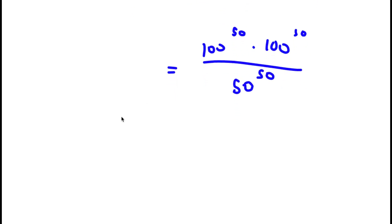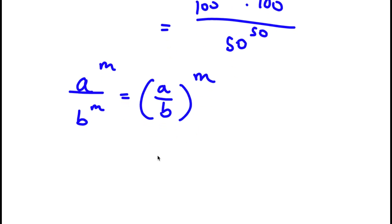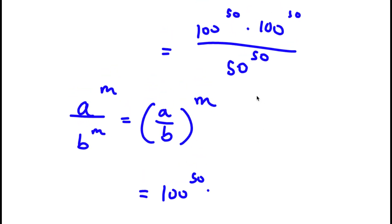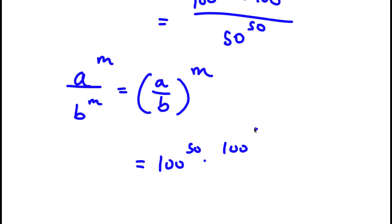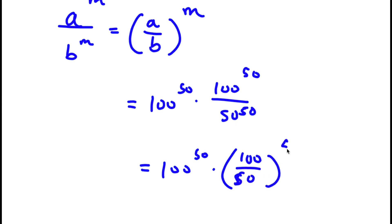Now, if I have something in the form a to the power of m over b to the power of m, this is equal to a over b, to the power of m. So in this case, I can rewrite 100 to the power of 50 over 50 to the power of 50 as 100 over 50, to the power of 50.